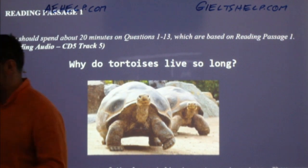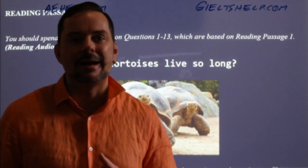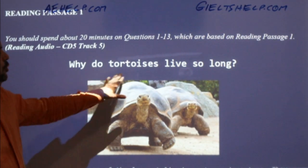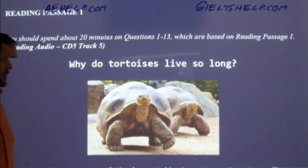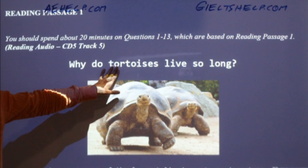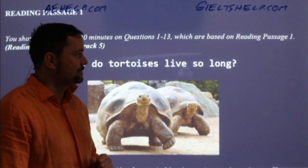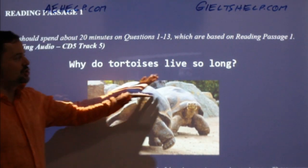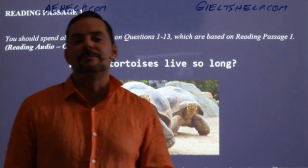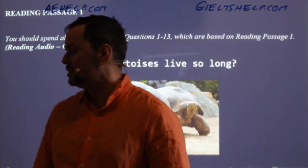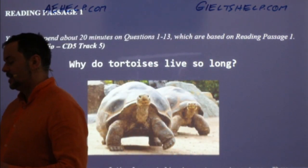Looking at our reading passage topic — this is coming out of our second exam book, test number five. The title of this passage is 'Why Do Tortoises Live So Long?' Now, when the title is a question like this, it's immediately a hint that you should think about the answer and try to predict the contents of the passage.